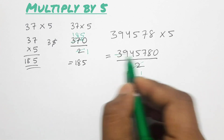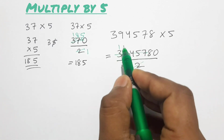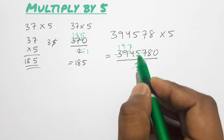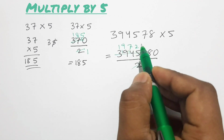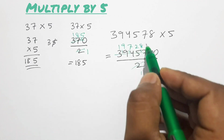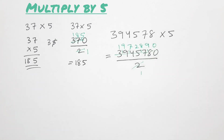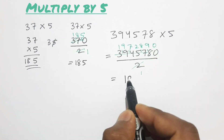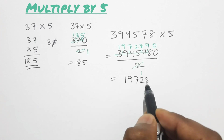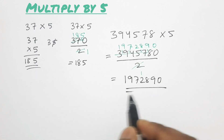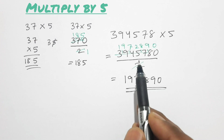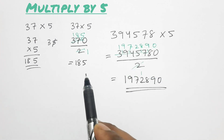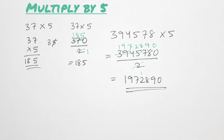Dividing 3945780 by 2: 2×1 is 2, carry 1; 2×9 is 18, carry 1; 2×7 is 14, carry 1; 2×4 is 8, carry 1; 2×8 is 16, carry 1; 2×9 is 18. So the answer is 1972890. This method needs less time than the usual method.